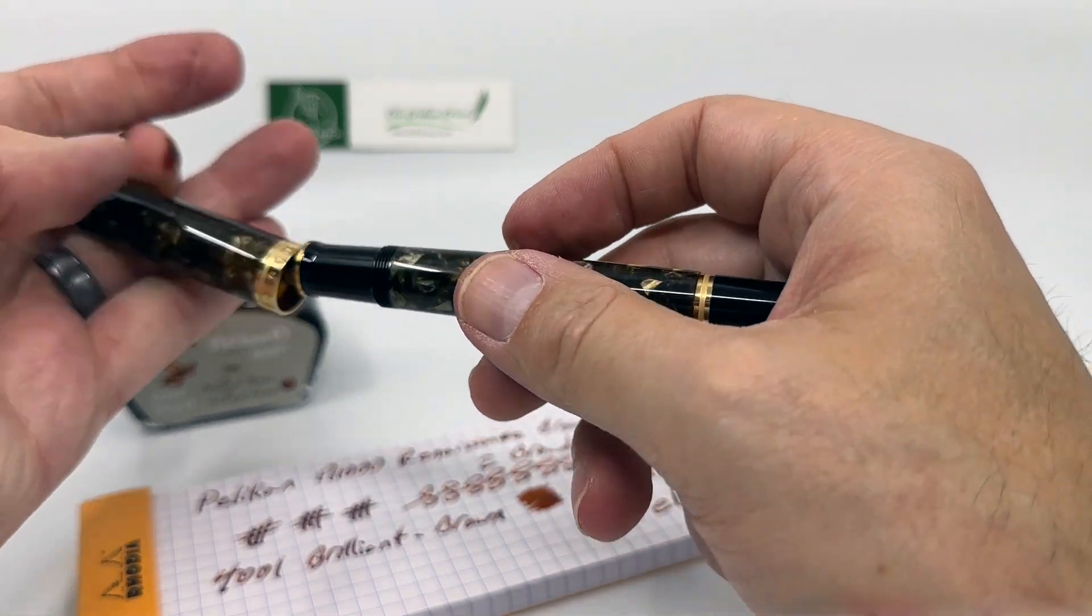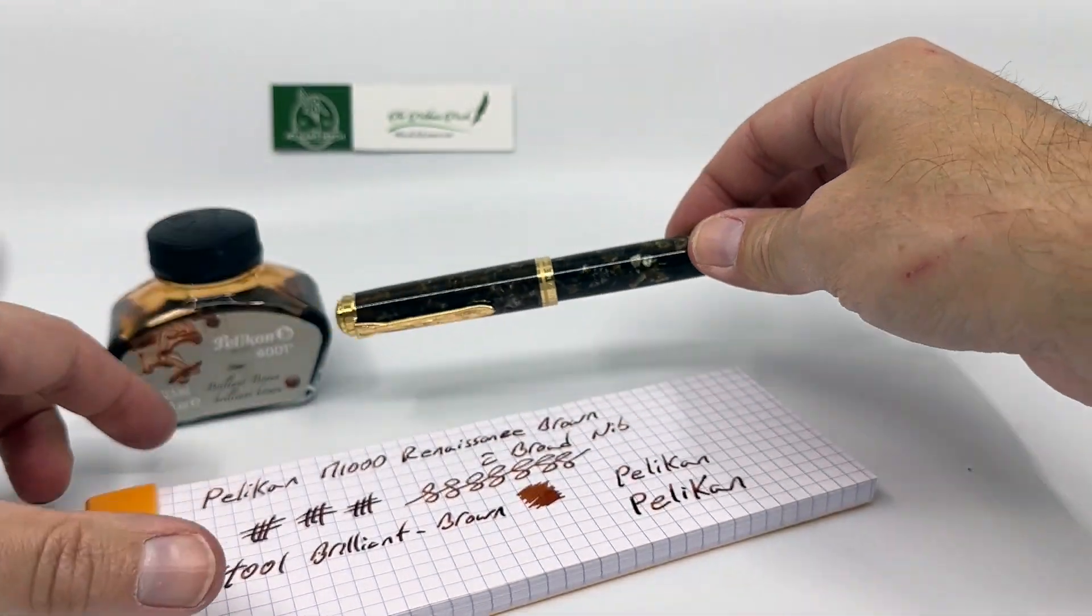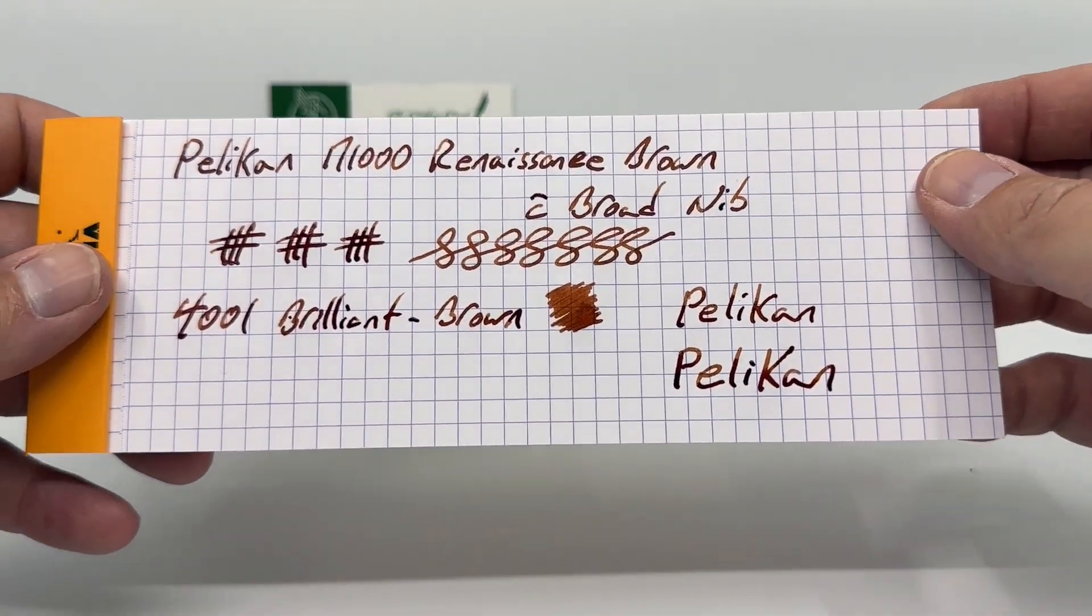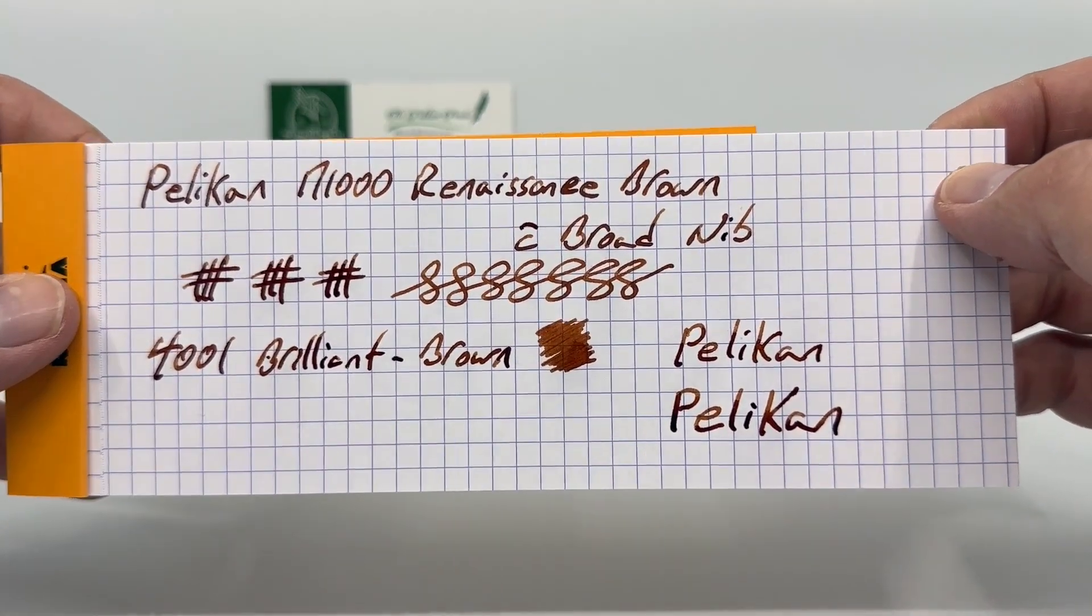So much so that sometimes you need blotting paper if you're in a hurry, because it does take a while for that ink to dry and that sheen to set in.